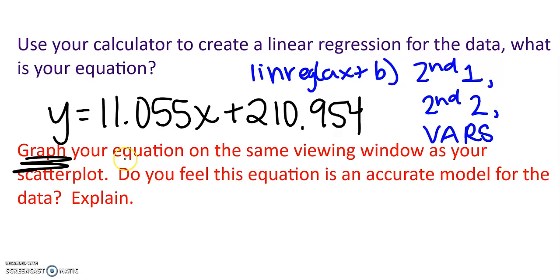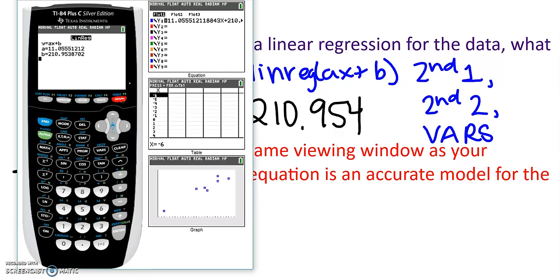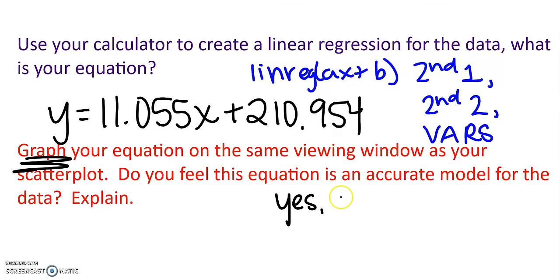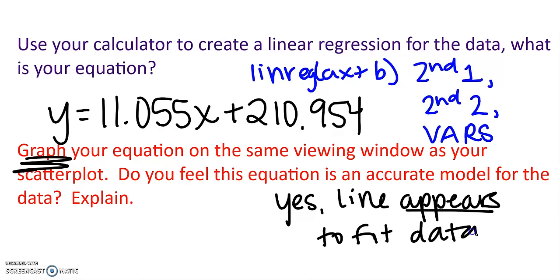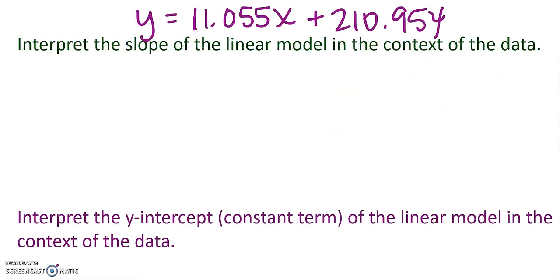So graph your equation on the same viewing window as your scatter plot. So if I go ahead and press graph, because I stored it in y one, I now see this line coming up. Do we think this is an accurate model for our data? I'm going to say yes. This line appears to fit the data. Now, an explanation of that would be that as fat increases, calories increase, and this line has a positive slope. All right, so that fits. We said our data appears linear and we used a linear regression that seemed to fit the model. So I think that yes, this is a good, it appears to be a good representation of our data.